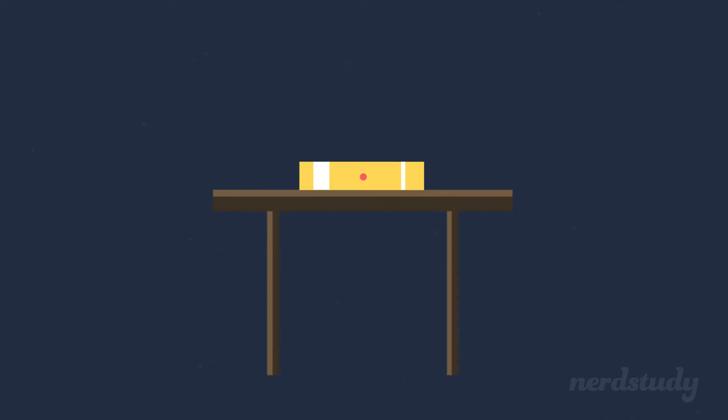After all, gravity is pulling the book downward, right? Well, clearly the table exerts an upward force which prevents the book from falling downward. It counteracts the force of gravity by exerting a force on the book which is exactly enough to prevent it from moving downward.